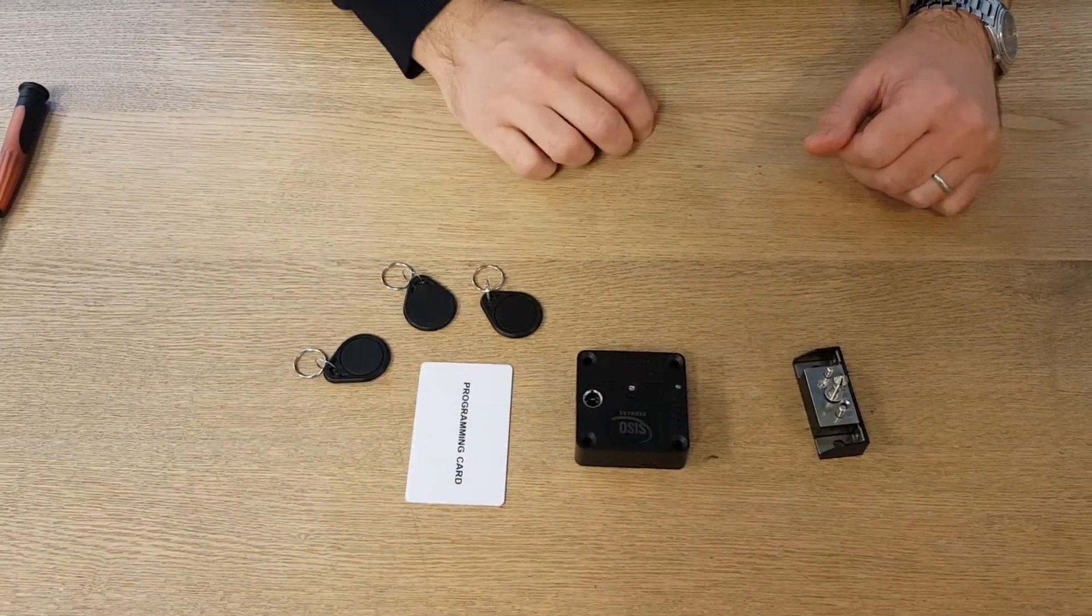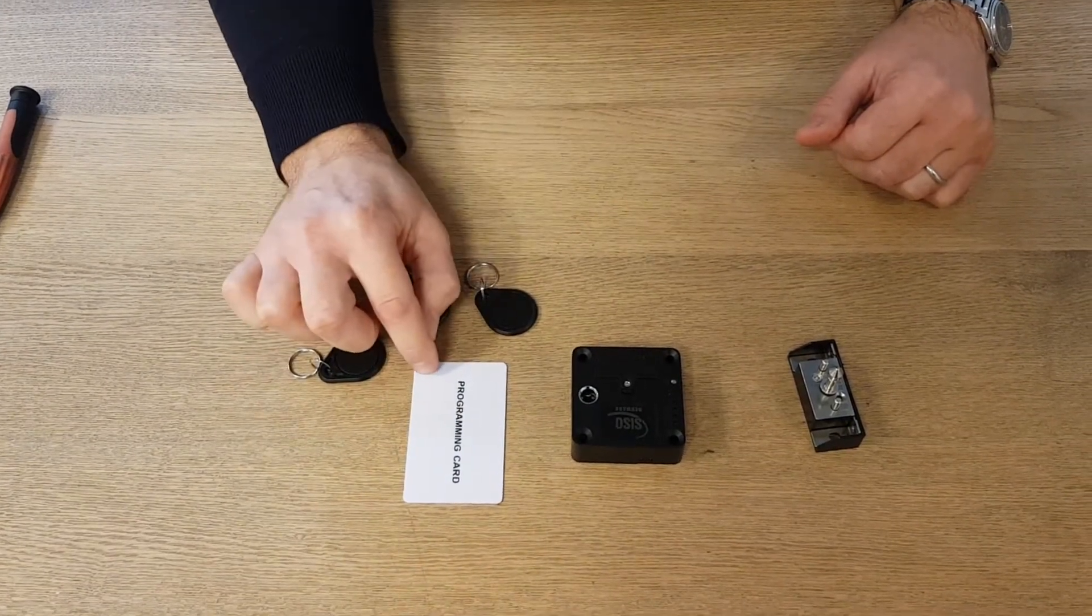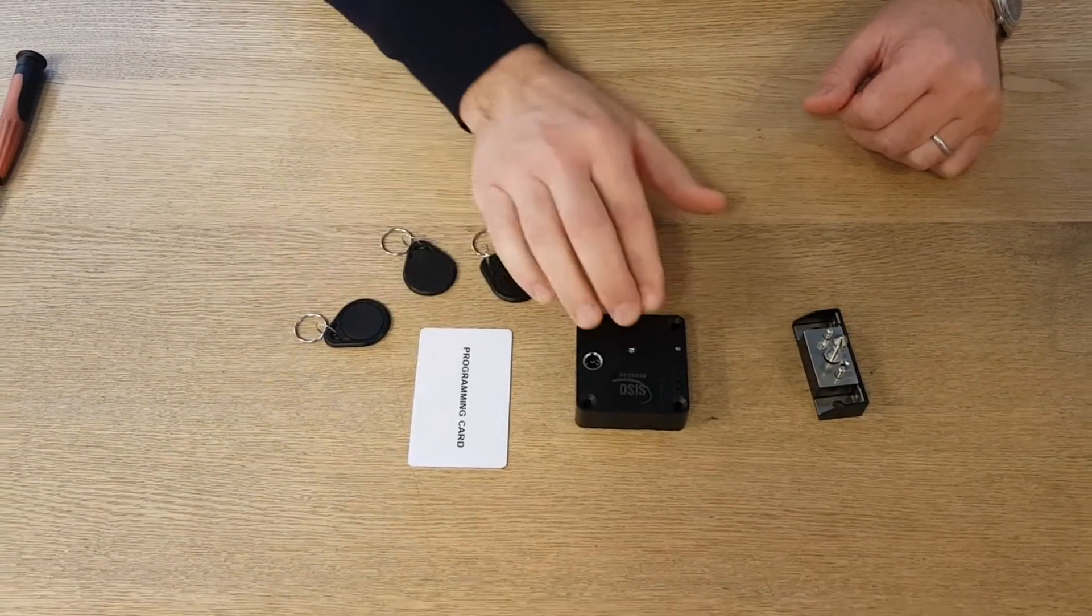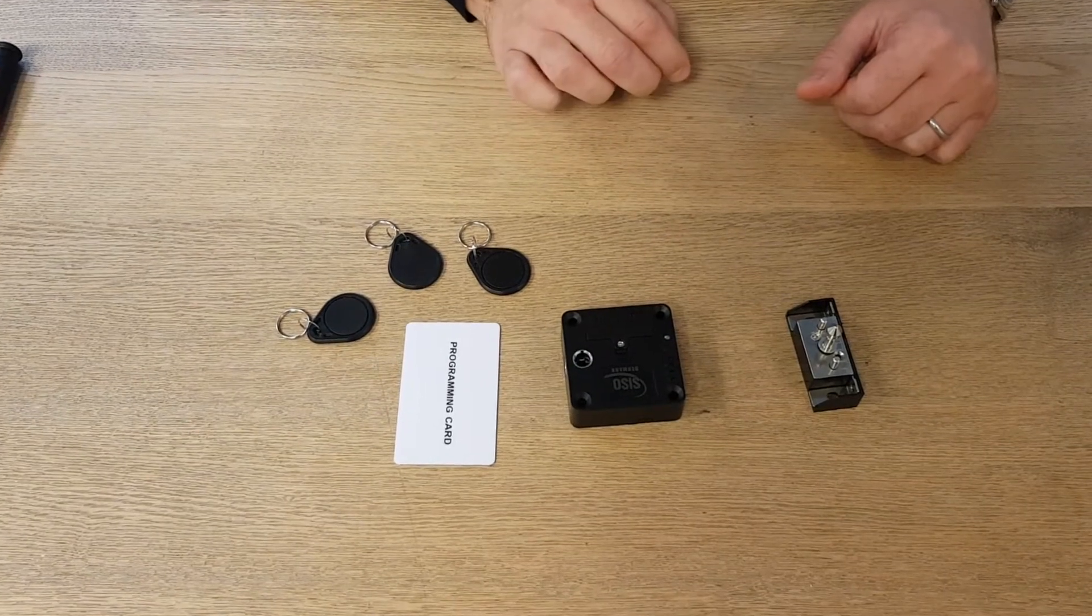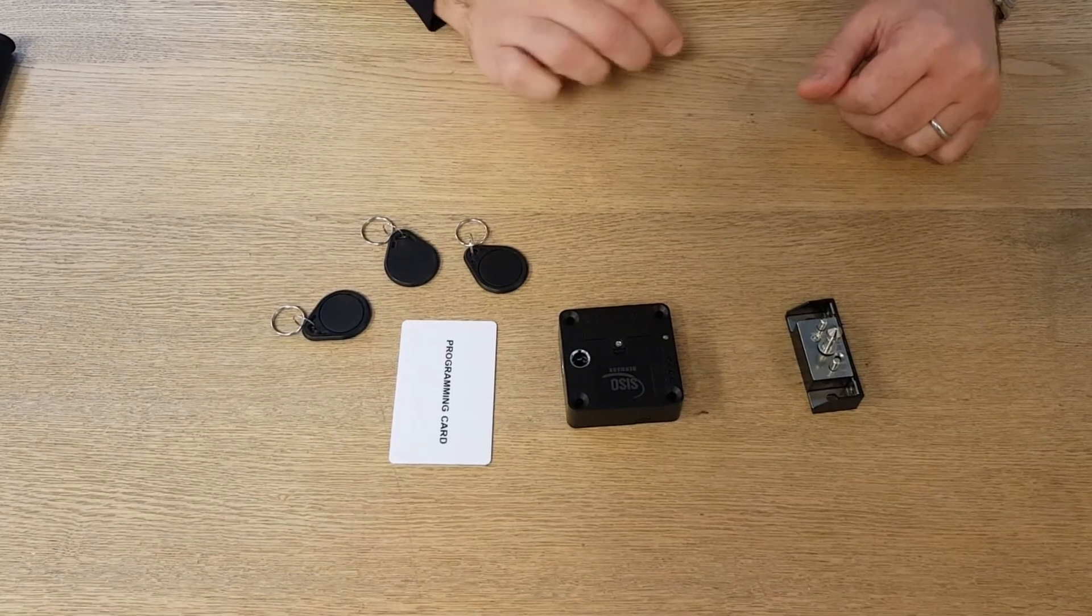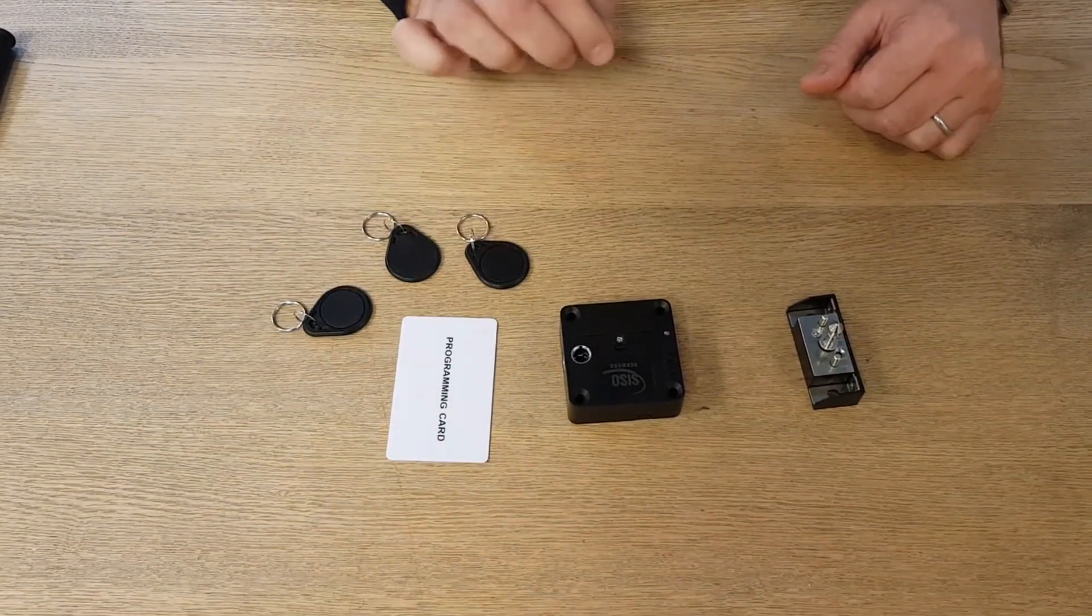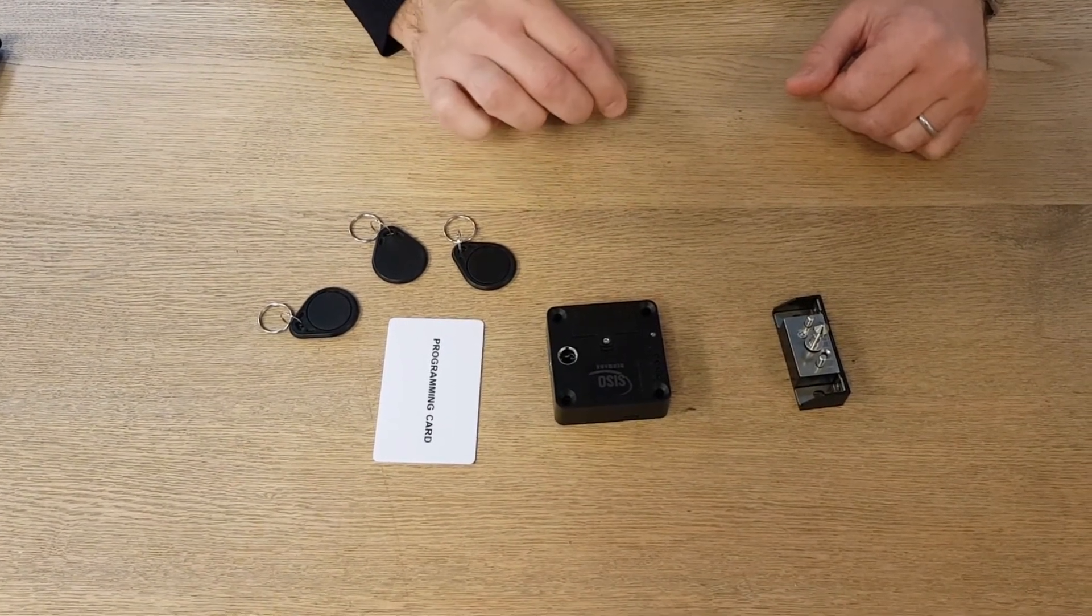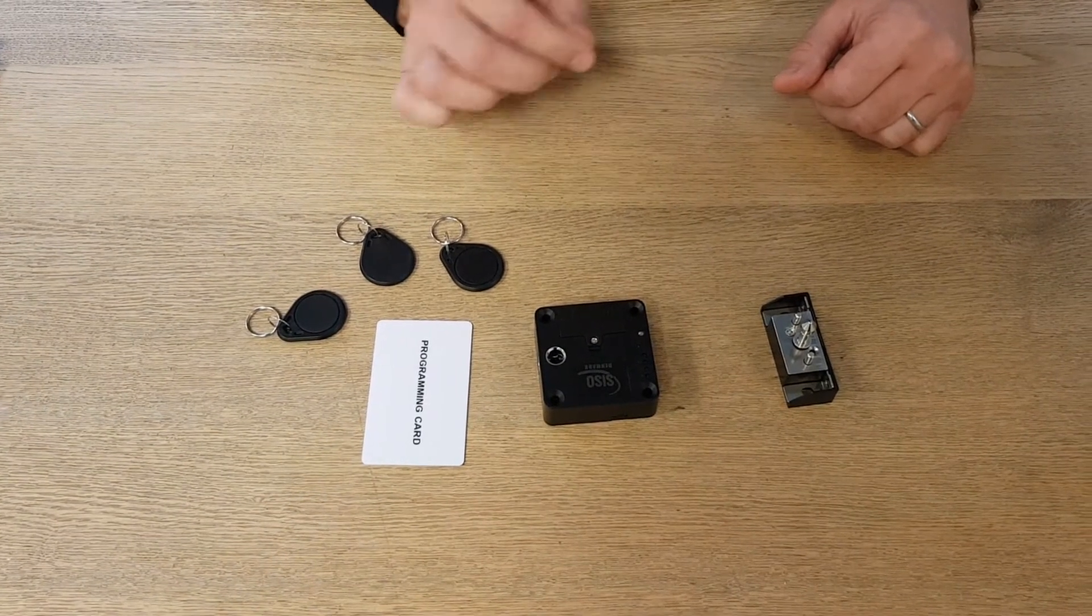And it's very important to stress that the programming card is only to be used as an emergency opening when the lock is in public mode. The next video we will make about this lock is how to use the lock in private mode. And in private mode the programming card is only a programming card and cannot be used as an emergency exit opener, a master card.